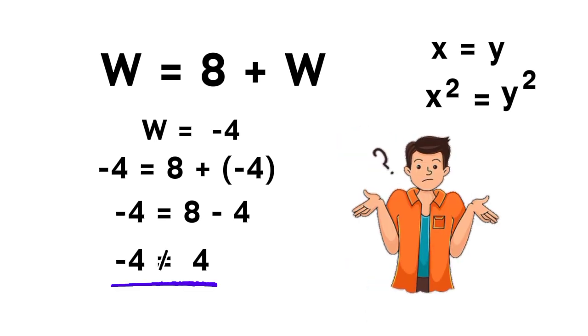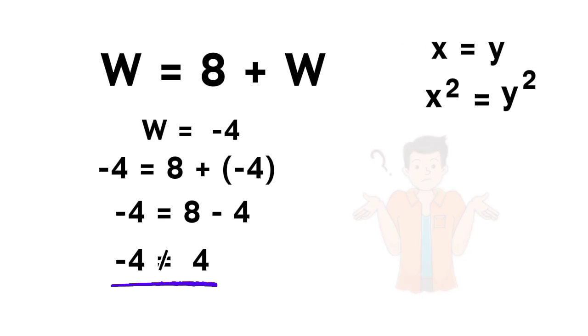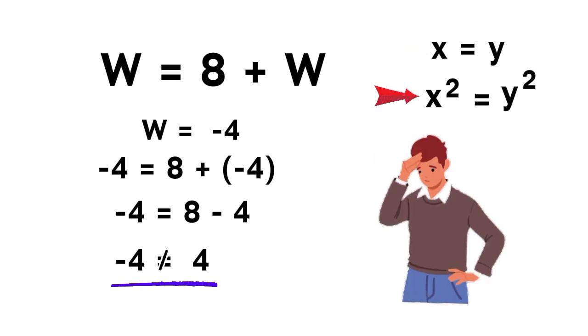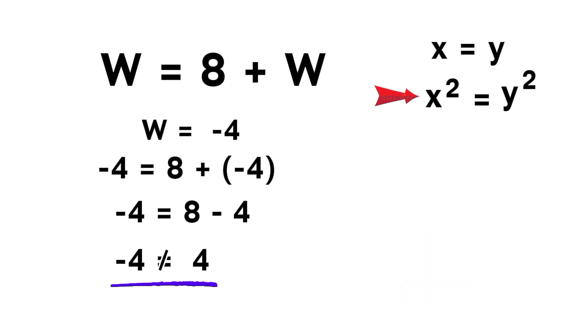So what went wrong? Here's the story. When we said, if x equals y, then x squared equals y squared, we forgot the hidden rule. If x squared equals y squared, then absolute value of x equals absolute value of y.